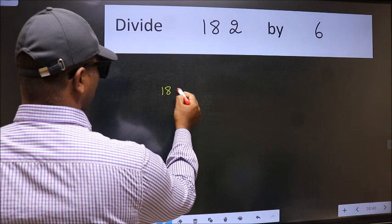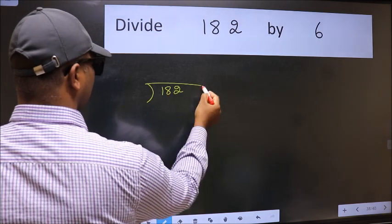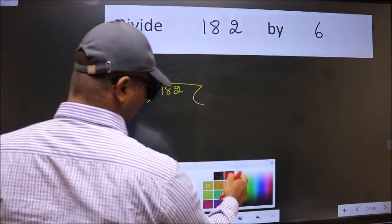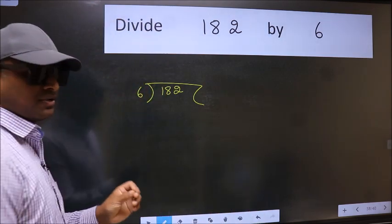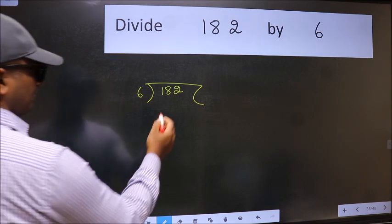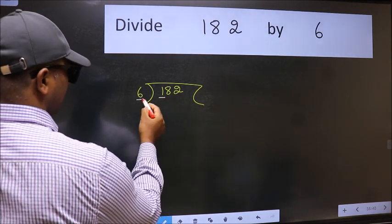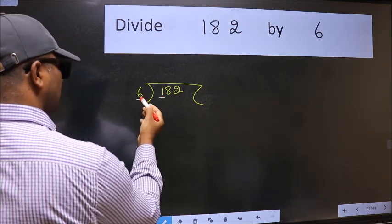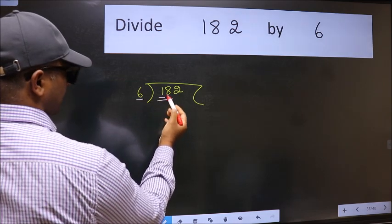Divide 182 by 6 here. This is your step 1. Next, here we have 1 and here 6. 1 is smaller than 6, so take two numbers: 18.